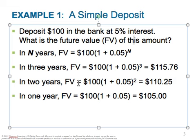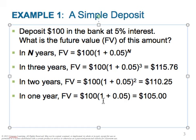In 2 years, the future value would be $100 times (1 + 0.05) raised to the power of 2. In 2 years, this sum would be worth $110.25. In 1 year, N is just 1, so there's no compounding exponent — you just multiply by 1.05 and get $105.